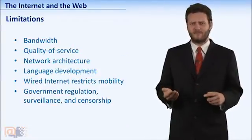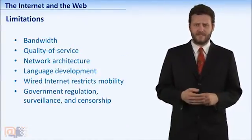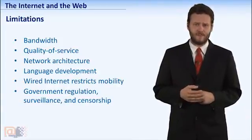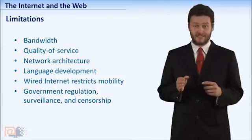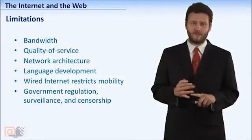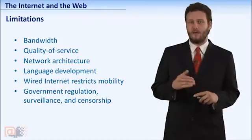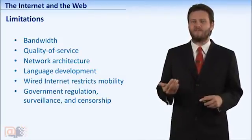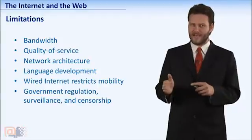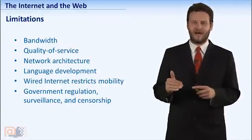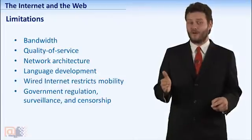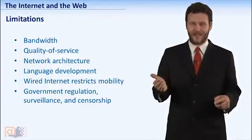The growth and expansion of the Internet and the websites that can be accessed on the network do face various limitations. One of the biggest limitations is bandwidth, or the capacity to carry a stream of data from a server to the end user. Bandwidth can be thought of as a system of pipes — only so much water, or data, can flow through at any one time, and how the pipes are laid out and connected affects the water pressure, or the flow of data, for the end user.